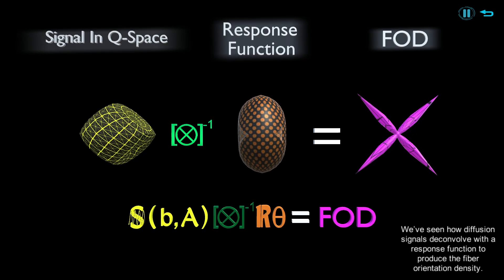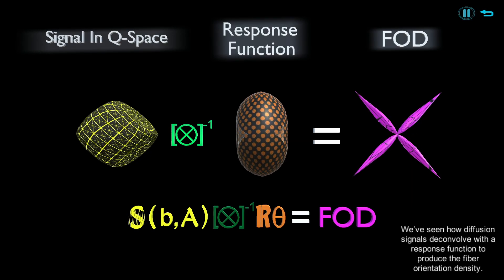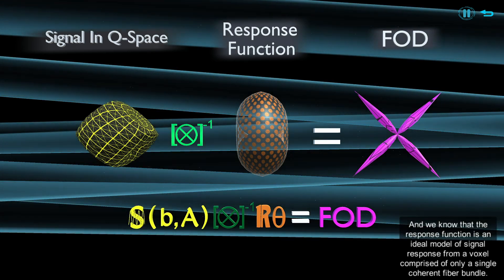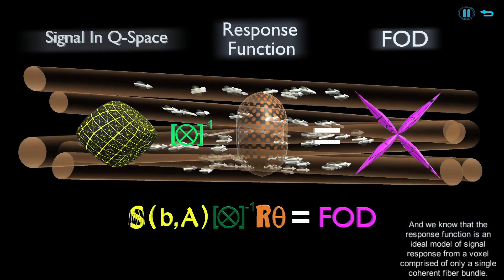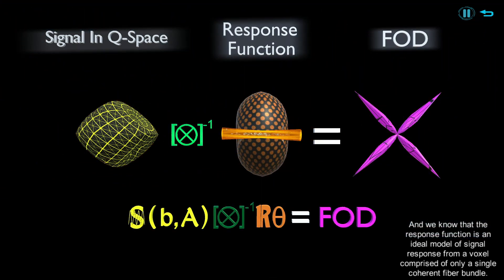We've seen how diffusion signals deconvolve with a response function to produce the fiber orientation density. And we know that the response function is an ideal model of signal response from a voxel comprised of only a single coherent fiber bundle.